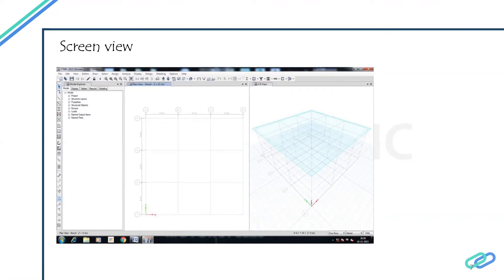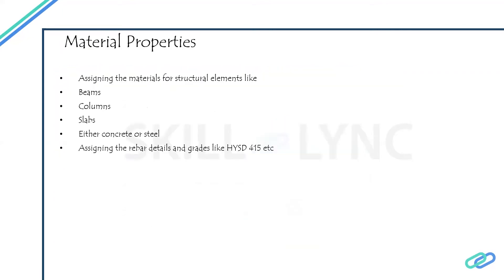Once the model is made with the required story height and span, we need to assign the material properties of the structure we are supposed to analyze and design. The material properties for beams, columns, and slabs are the three major elements we are going to design in ETABS version 2016. For beams, we decide the grade of concrete and the steel grade.